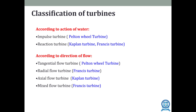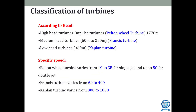We will discuss these types in detail in a later session. According to head: high head turbines operate above 1070 meters and are impulse turbines like the Pelton wheel; medium head turbines operate from 60 to 250 meters, for example the Francis turbine; and low head turbines operate below 60 meters, such as the Kaplan turbine. Regarding specific speed: the Pelton wheel ranges from 10 to 35 for single jet and up to 50 for double jet; Francis turbine from 60 to 400; and Kaplan turbine from 300 to 1000.